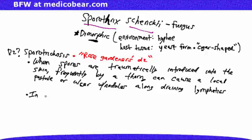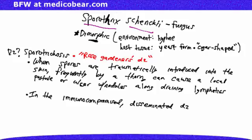In the immunocompromised, disseminated disease is possible — meaning the disease can spread throughout the body.